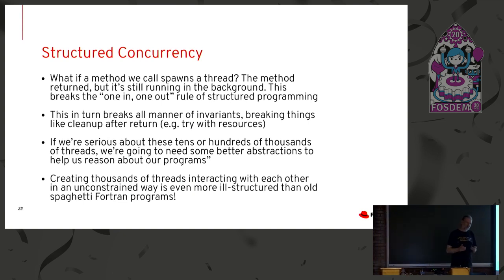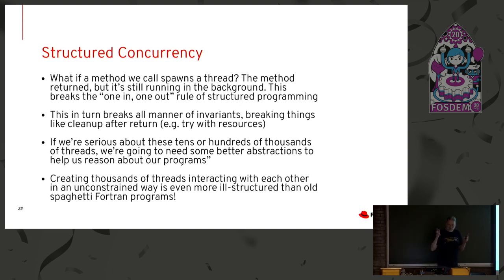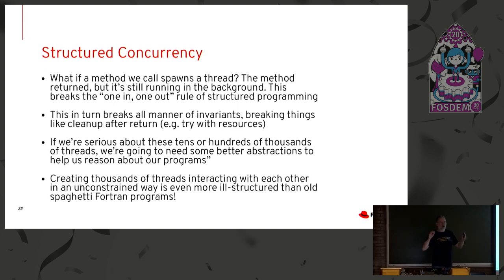Let's think about structured programming. Traditional structured programming has all your control structures with an entry at the top and an exit at the bottom — you can reason about programs much more easily, everything nests nicely. When you think about what's actually going on with threaded programming, it is the most gloriously unstructured way of programming you can possibly imagine. There's one in and many outs; threads spawn here and start running there and send messages to each other. With Project Loom, if you're going to have tens or hundreds of thousands of threads, we somehow have to constrain that complexity so we can predict how a program is going to work and analyze it.